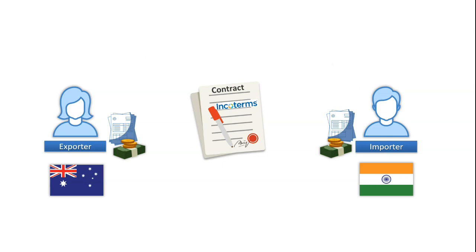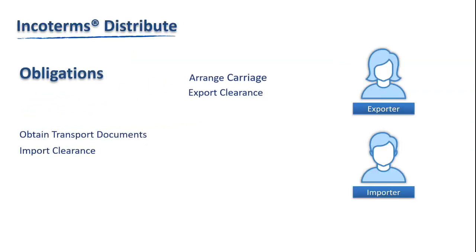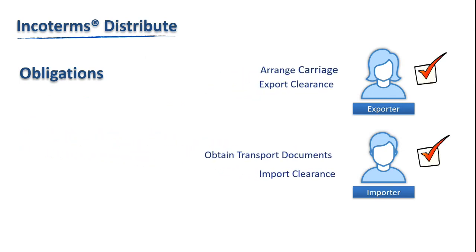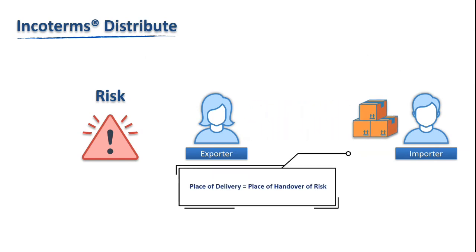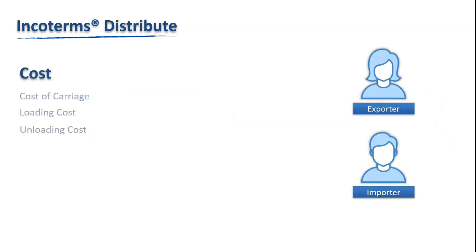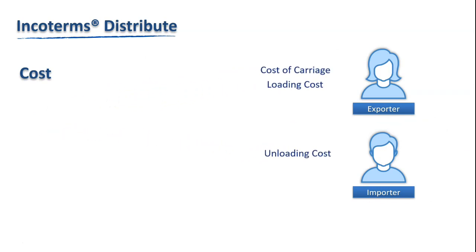Incoterms are applicable to both domestic and international trade. They are meant to distribute the following between a buyer and a seller: who does what — who will arrange carriage, who will do customs clearance, who will obtain shipping documents, etc. The delivery of goods from seller to buyer essentially marks the transfer of risk. So incoterms indicate at which point in the transportation process goods are considered delivered by the seller and thus risk is transferred from seller to buyer. Lastly, cost — which party is responsible for which cost, for example cost of carriage, packaging, loading, unloading, etc.